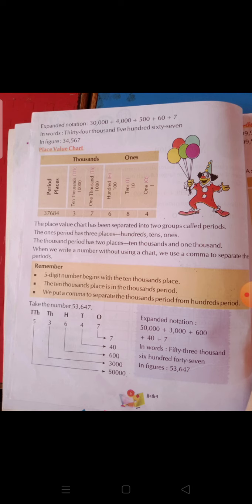When we write a number without using a chart, we use a comma to separate the periods. If we are not making a place value chart, then we will use a comma to separate the periods.